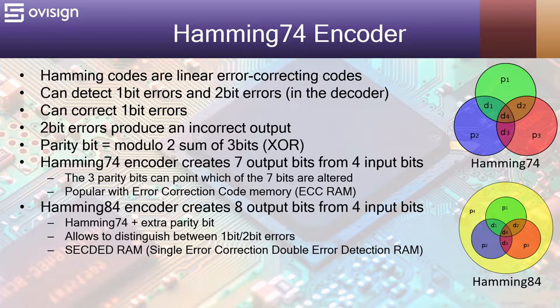A Hamming 8.4 encoder creates eight output bits from four input bits. It's a Hamming 7.4 codeword plus an extra parity bit. It allows to distinguish between one-bit and two-bit errors. It's also known as a SECDED RAM which comes from single error correction and double error detection RAM.